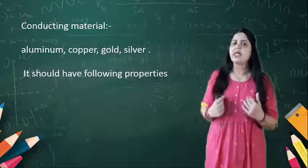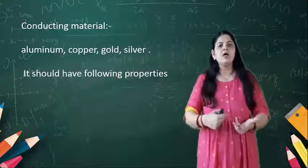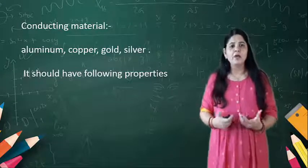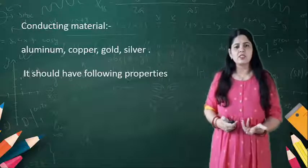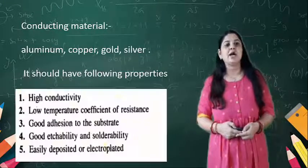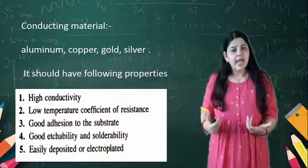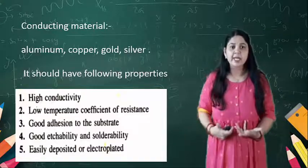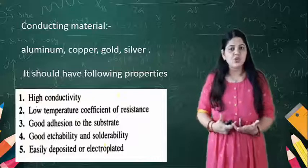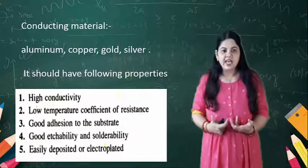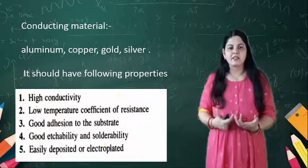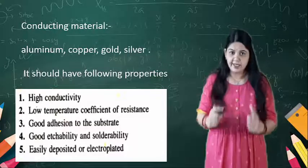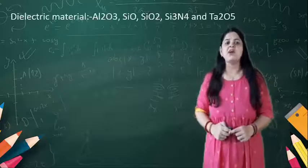For conducting purposes, the conducting layers in the MMIC use materials such as aluminum, copper, gold, and silver. The conducting material should have the following characteristics: high conductivity, low temperature coefficient of resistance, good adhesion to the substrate, good etchability and solderability, and should be easily deposited. These are the characteristics of the conducting material used for MMIC fabrication.